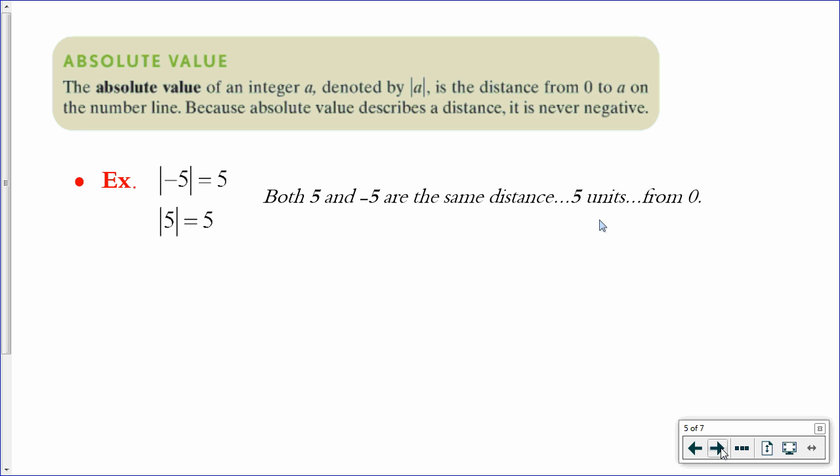Absolute value. The absolute value, denoted by these two straight brackets on either side of a number, is the distance from 0 on a number line. So, something like negative 5, when you put it in absolute value brackets, has an absolute value of regular 5, because it is 5 units away from 0. The absolute value of 5 is also 5.